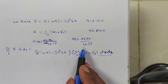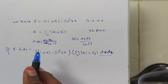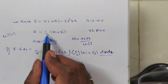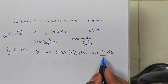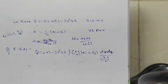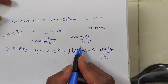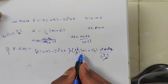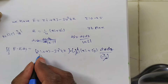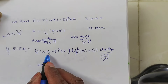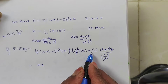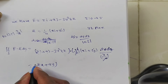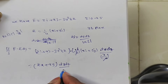Now n̄ · î = x/4. In the dot product, the 4 in the denominator and the 4 from n̄ cancel. Computing: î·î = 1 gives z·x; î·ĵ = 0; ĵ·ĵ = 1 gives x·y; k̂·î = 0, k̂·ĵ = 0. So the numerator becomes zx + xy, divided by x.